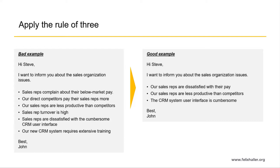The rule of three is a classic writing principle that has been used and applied over centuries. For instance, Caesar said 'Veni, Vidi, Vici.' The Bible states 'Father, Son, and the Holy Spirit.' The US Constitution says 'life, liberty, and the pursuit of happiness.' This principle states that lists of three are more memorable and effective than other numbers. A list of three is simple and catchy, so always aim for lists or ideas of three if possible to make them more impactful.